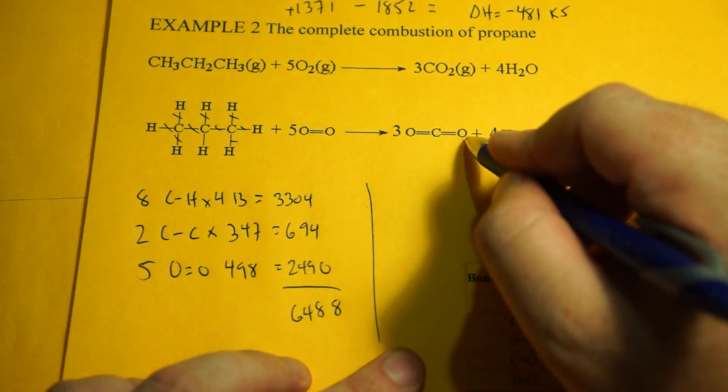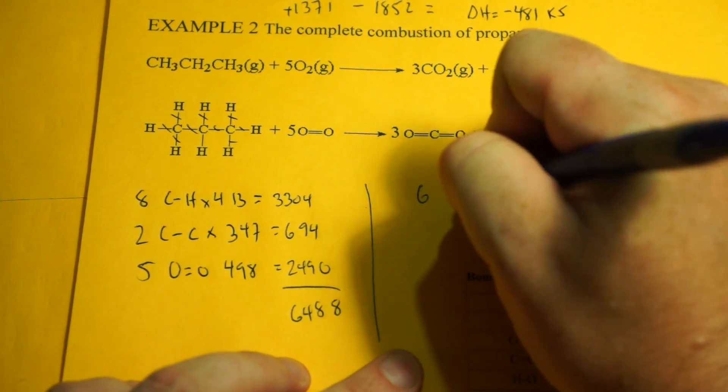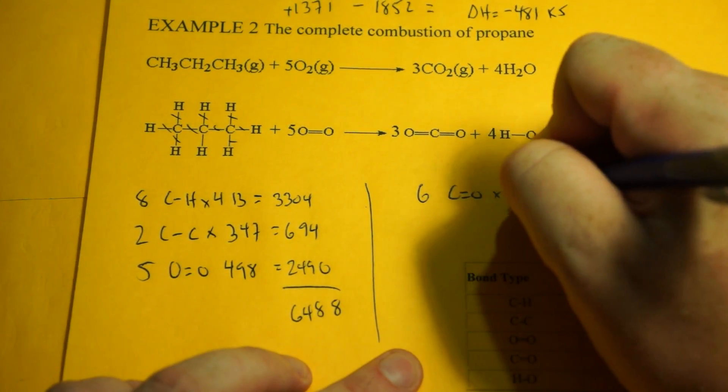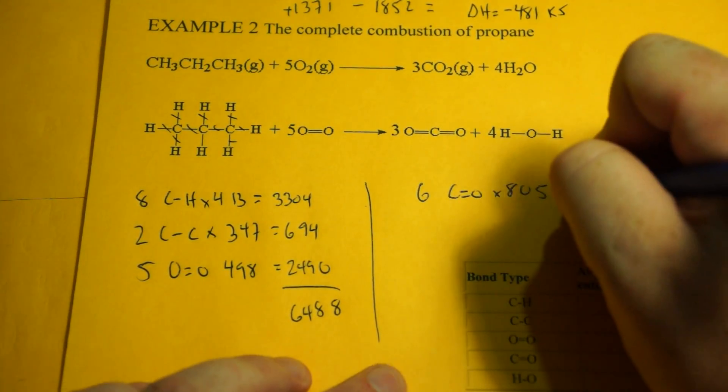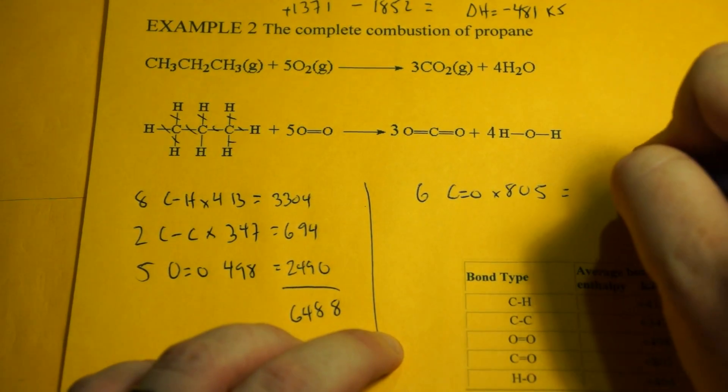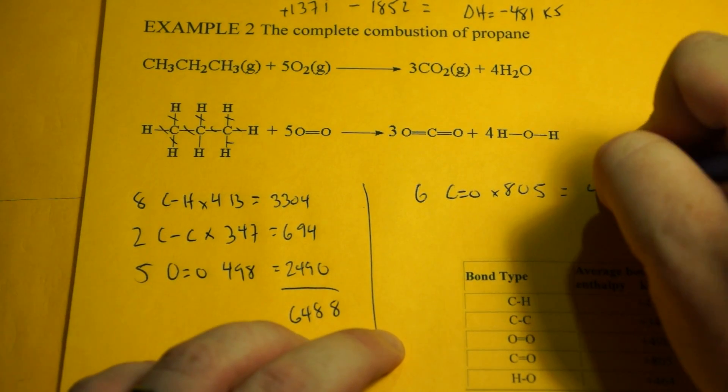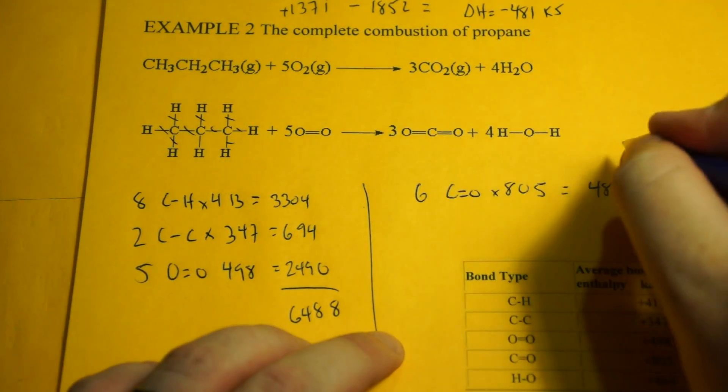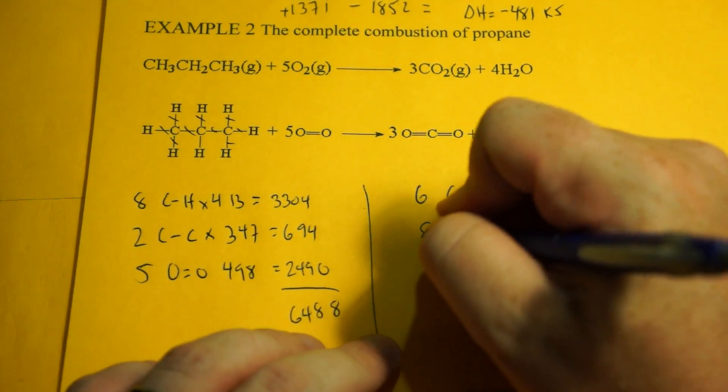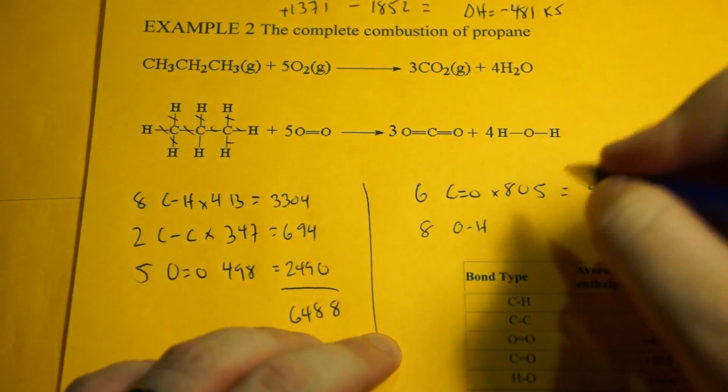Now we've got to add up this side. We have 3 CO2s. That really means we have 6 COs. And CO is valued at 805. So 805 times 6, what is that? 4,830. And then we have 4, oh, water's linear now. That should be actually bent.